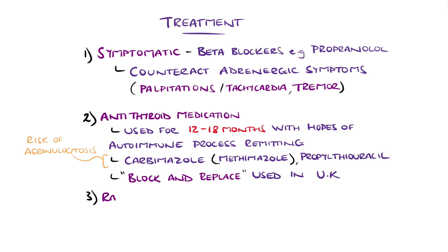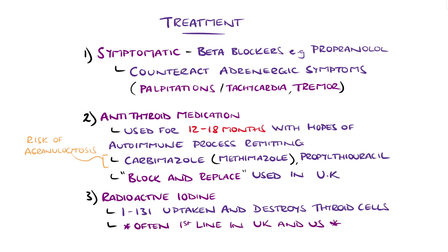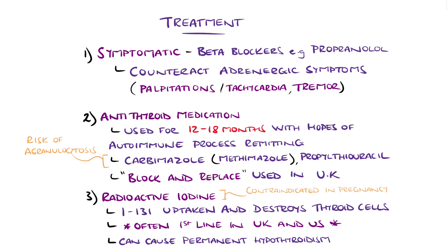Radioactive iodine I-131 involves taking advantage of the thyroid's ability to uptake iodine, to deliver radioactivity to those cells and destroy them, thereby reducing production of thyroid hormone from the gland. This is often a first-line option in the UK and US for hyperthyroidism, and is a definitive treatment in Graves' and multinodular goiter. Side effects include permanent hypothyroidism, and it should not be used in pregnancy.